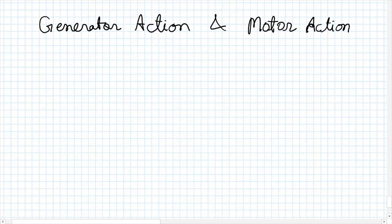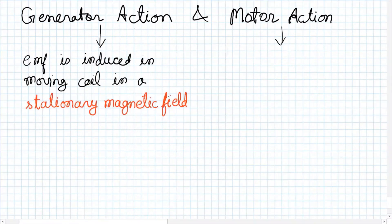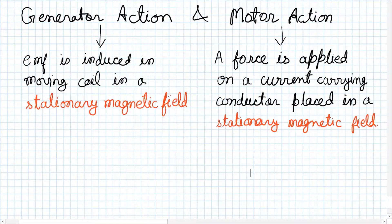In the previous videos we discussed Ampere's law — a current carrying conductor produces a magnetic field — and transformer action, where a time-varying magnetic field produces an EMF in a coil linking the flux. Now let us discuss generator action and motor action. Generator action says an EMF is induced in a moving coil in a stationary magnetic field, and motor action says a force is applied on a current carrying conductor placed in a stationary magnetic field.